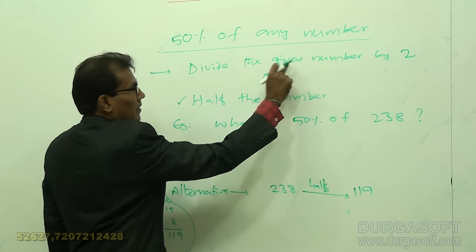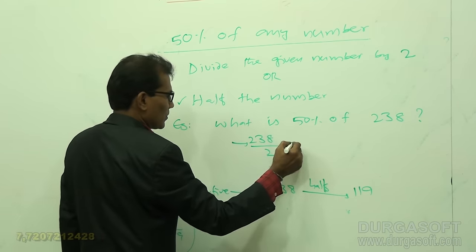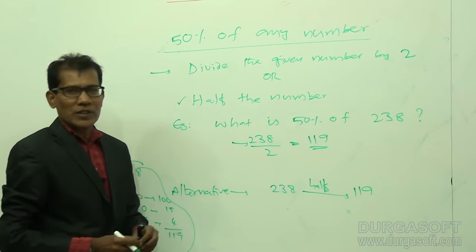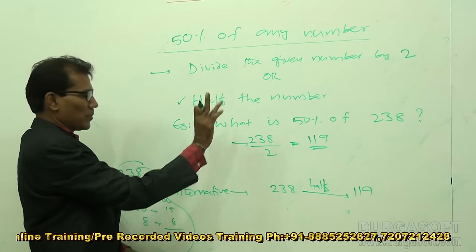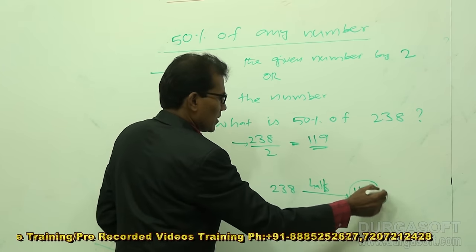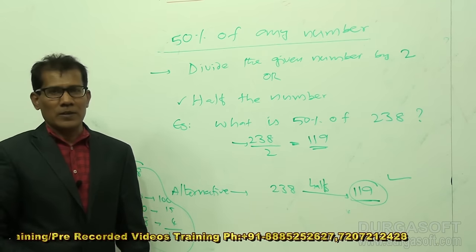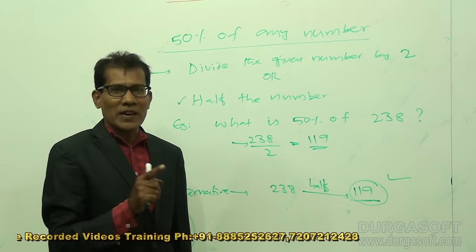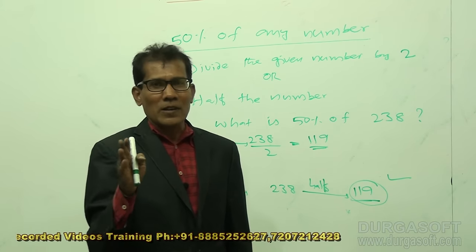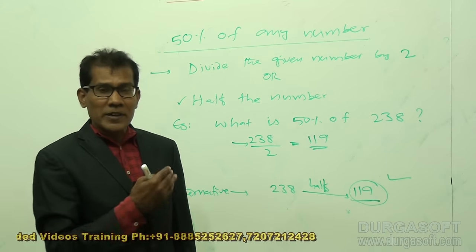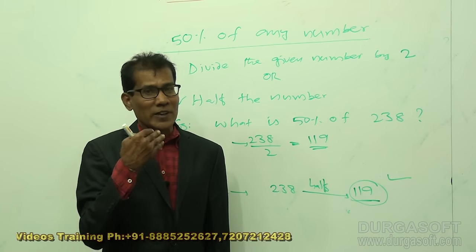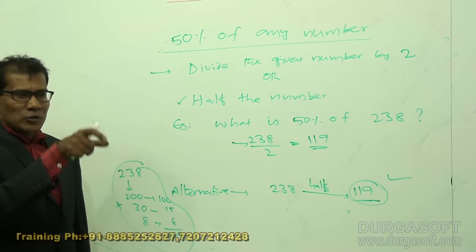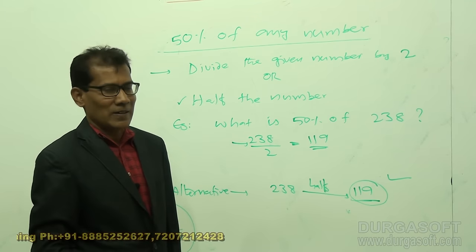To calculate 50% of any number, simply halve the number or divide by 2. For example, 50% of 238 is 119. Avoid the formal division — practice halving mentally by splitting numbers into parts. In aptitude problems, knowing how to quickly double or halve any number is very important.